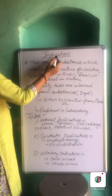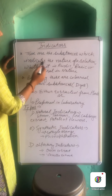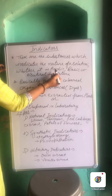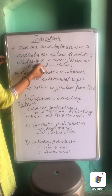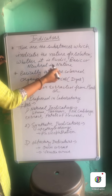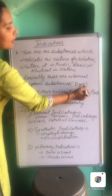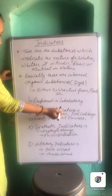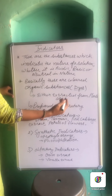So now let's see what indicators are. These are the substances which indicate the nature of a solution — whether the solution is acidic, basic, or neutral in nature. Basically these are the colored organic substances, and we can say these are colorful dyes which we extract either from plants or they are prepared in laboratories with the help of different types of chemicals.